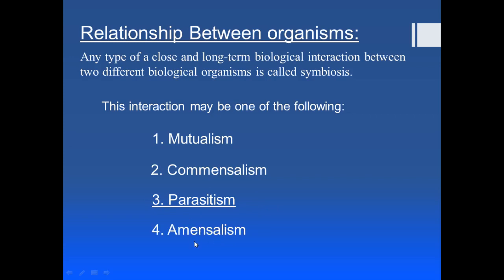Another type is amensalism — a type of symbiosis in which one organism is harmed whereas the other is neither benefited nor harmed. Finally, synecrosis is a relationship in which both organisms are harmed. These are the various types of interaction between organisms, but our main topic of discussion will be parasitism, where the parasite gains benefit while the host — mainly the human body — is harmed.